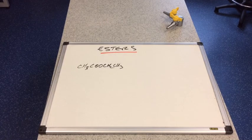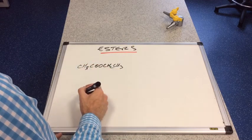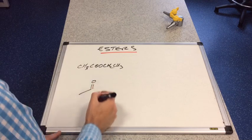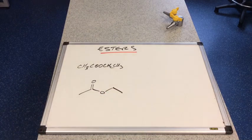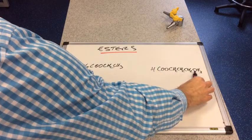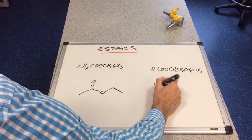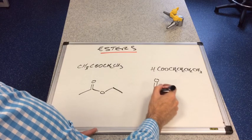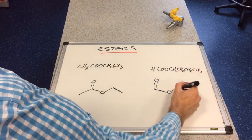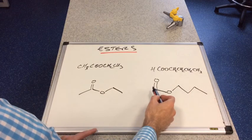Let's look at the skeletal formulae of esters. For ethyl ethanoate, we draw the methyl group, C double bond O, single bond O, CH₂, CH₃. For butyl methanoate, we have C double bond O (the H on the methanoate is not shown in skeletal formula), single bond O, then a four-carbon chain — 1, 2, 3, 4.